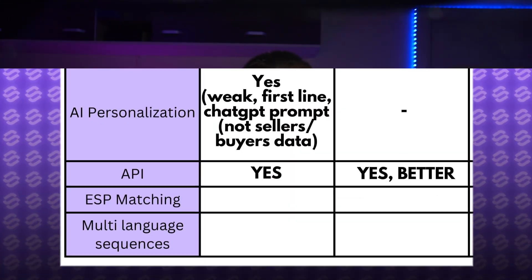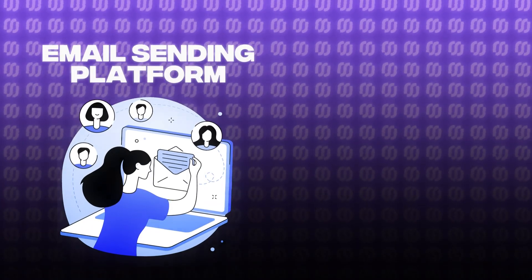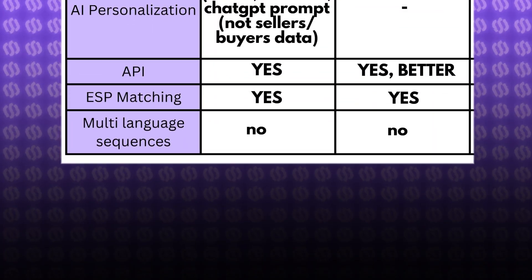Both Instantly and Smartlead have ESP matching on their higher tier plans, which basically means that the email sending platform will match your email service providers in your sequence. Meaning if your prospect has a Gmail account, your sequence will use a Gmail inbox of yours to contact that prospect; if the prospect has an Outlook, you'll use Outlook — and so on. This is known to increase deliverability as well. Unfortunately, neither of the platforms provide multi-language sequences, which is a crucial option if you want to increase your reply rate, as it matches your cold email language with your prospect's language.